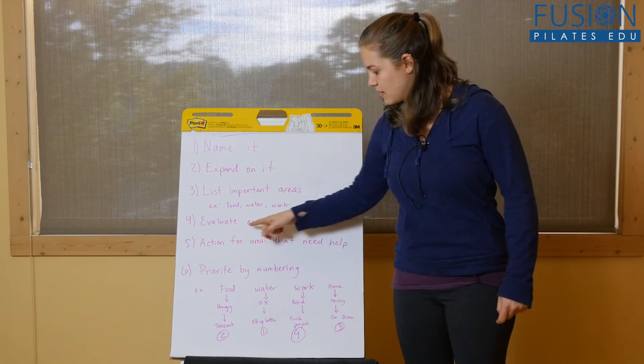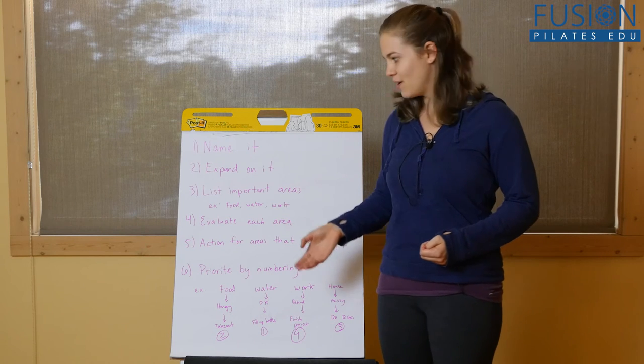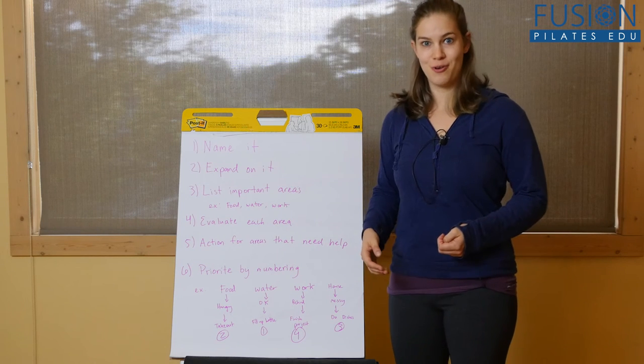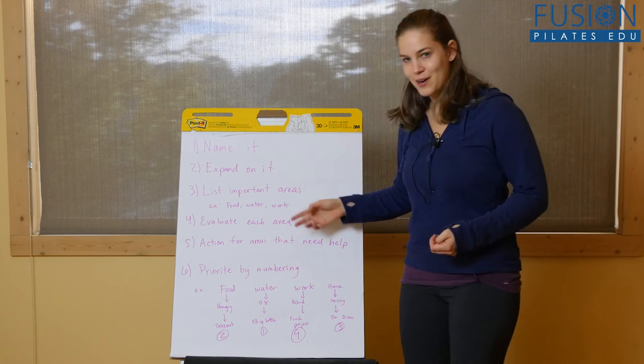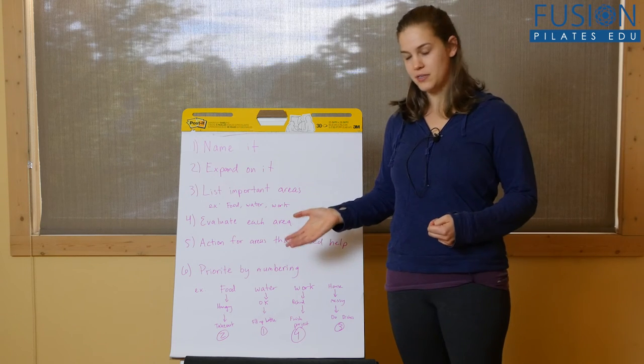The next step is to evaluate each area. You would look at the word and say food, hmm I'm pretty hungry. Water, I need to drink water, I'm dehydrated. Work, I'm pretty behind right now. And then you would go through each category and see how you're doing.